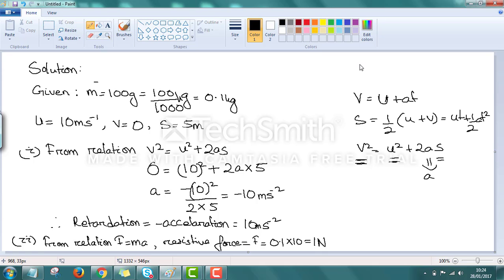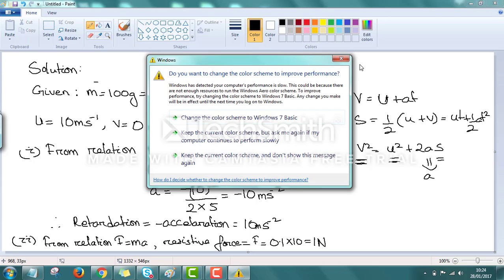And the second bit is find the resistive force. From the relation F = MA, we can see that resistive force is equal to 0.1 into 10, that is 1 Newton.